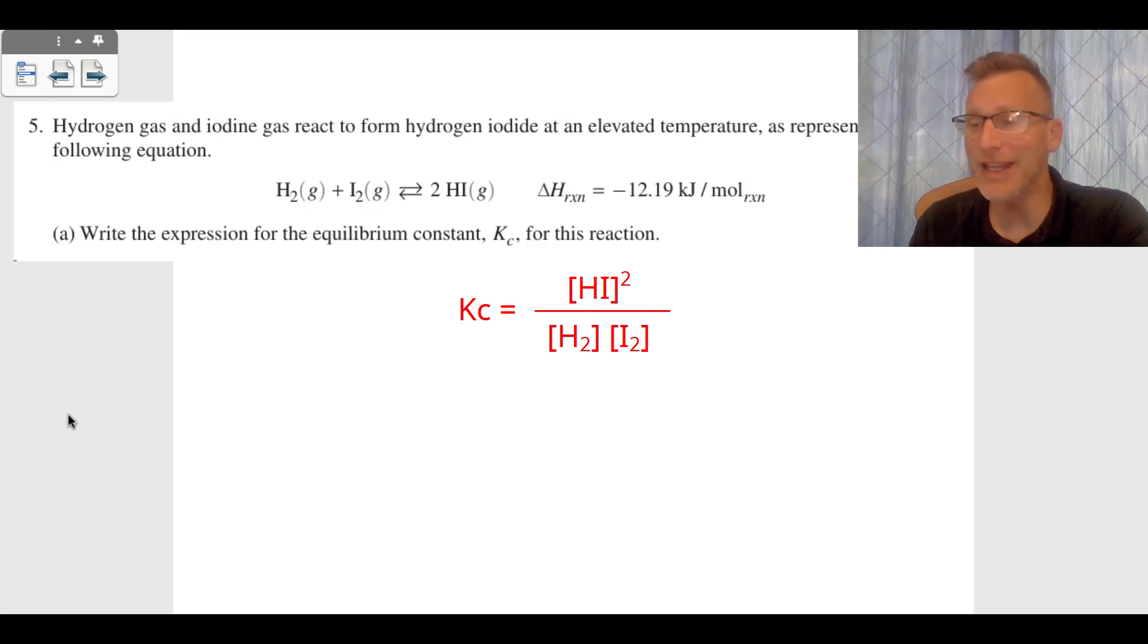You can see it starts off with an equilibrium reaction. That's something to keep in mind. We have 2 moles of HI gas. It's in equilibrium. Something else to keep in mind, the delta H is negative. It's an exothermic reaction.